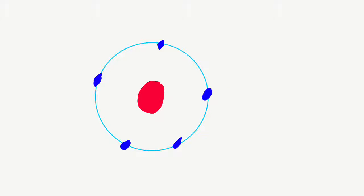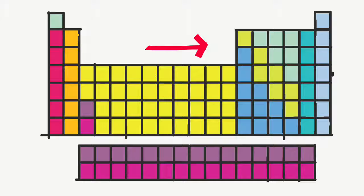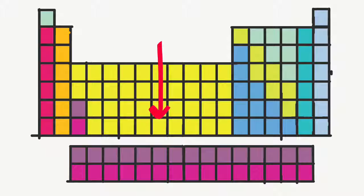Metallic character is how likely an atom is to give up an electron. Metallic character decreases when you go left to right across a period and increases when you go down a group.